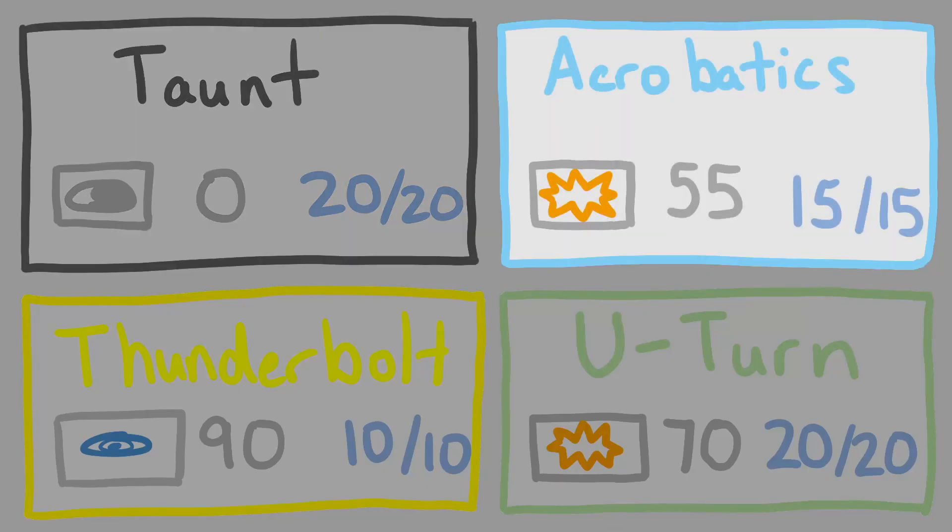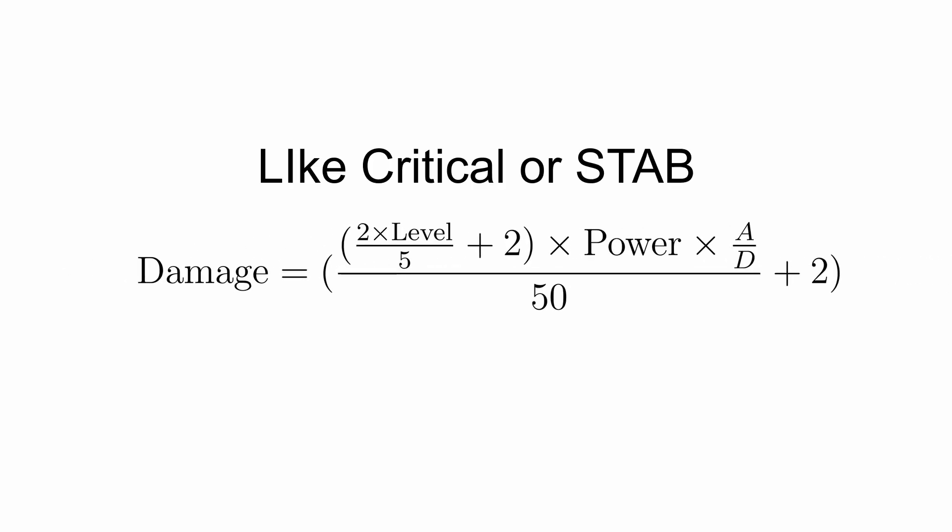We'll get to the scary matrix things later. Anyways, in battling, you select moves that do damage. The amount of damage you deal is linked to this complicated looking formula. For our purposes, I want to look at this primary part, as the rest are a bunch of modifiers that are more commonly talked about.